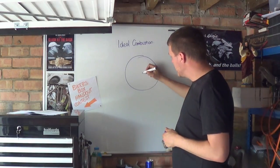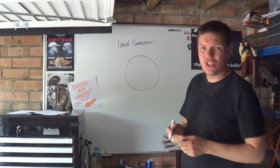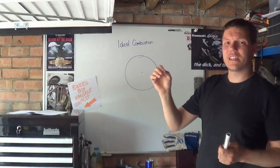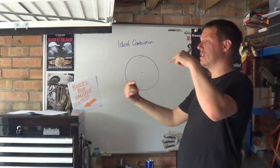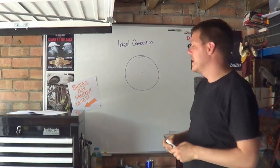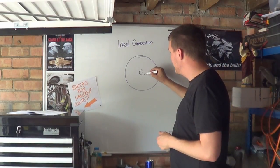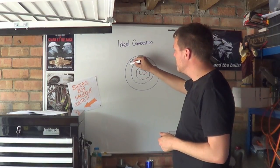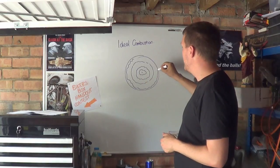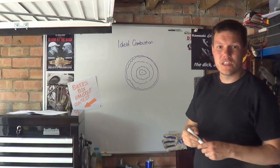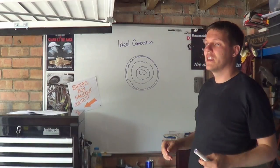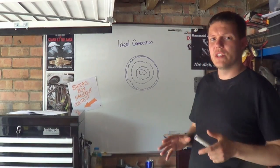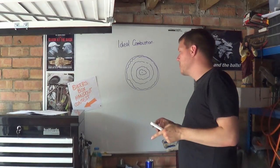When ignition occurs, you have an ignition event from this theoretical spark plug that fires into the middle. You get a flame front that propagates outwards, which will mean that you'll have a nice distribution of pressure. The pressure will gradually increase, everything's lovely. There's a problem with this though.